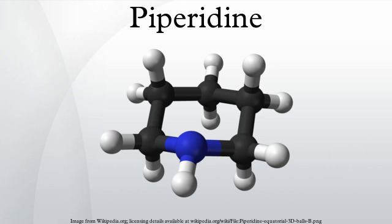Piperidine itself has been obtained from black pepper and in other natural sources. The piperidine structural motif is present in numerous natural alkaloids, including piperine, which gives black pepper its spicy taste — and this is what gave the compound its name.